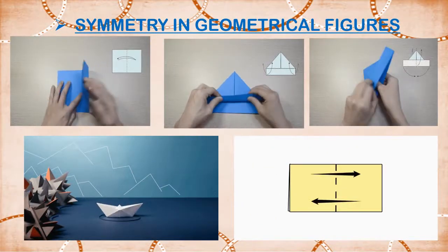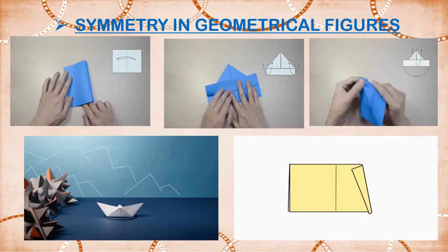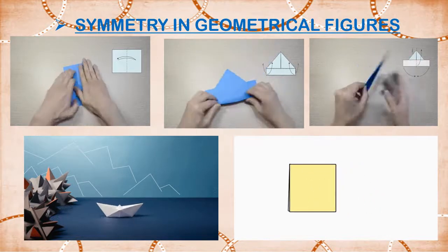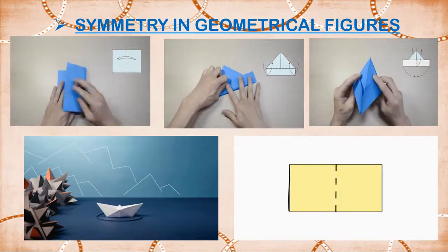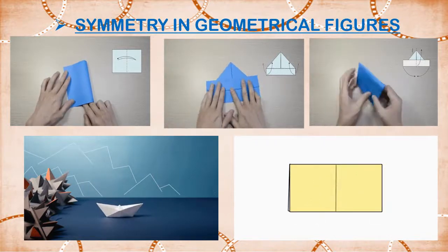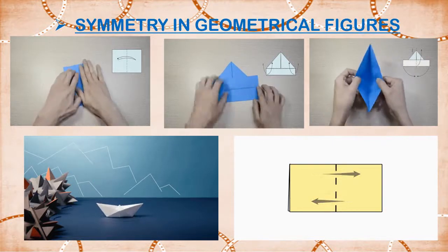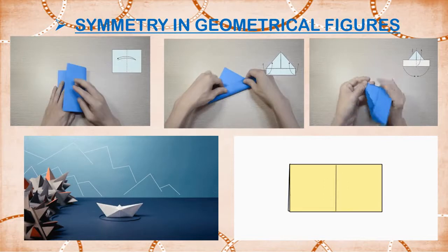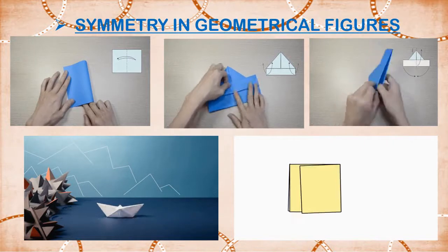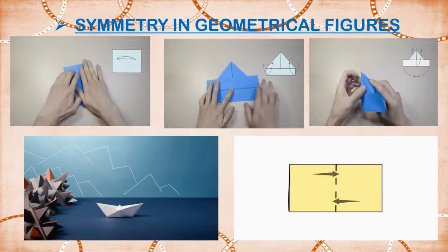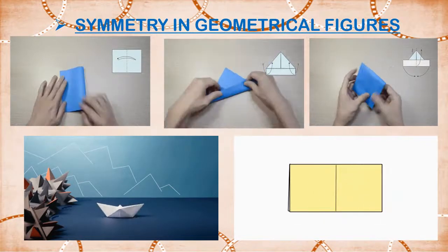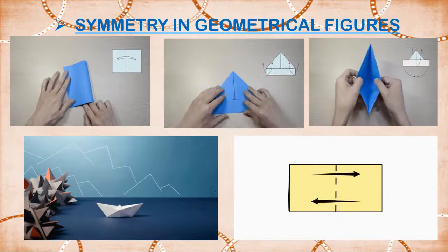Here is symmetry in geometrical figures. Children, do you know that when we fold a paper for making a paper board and open it, the parts on both sides of the line make the parts look the same. Here you can see in this picture, the fold along the dotted line in the rectangle divides it into two parts which fall exactly on one another. The rectangle is symmetrical with respect to this line.